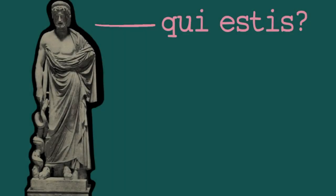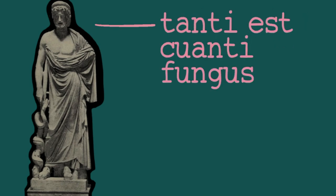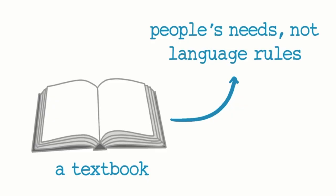Even books for learning dead languages have this approach. I had to learn a little bit of Latin as an undergrad, and the first thing we learned was how to ask someone who they are and how to respond to that question. I even learned how to insult someone in Latin, a language in which the last native speaker died centuries ago. Textbooks start this way because they are built around people's needs and knowledge, not around language rules.